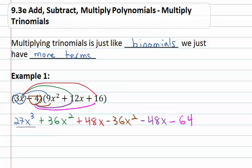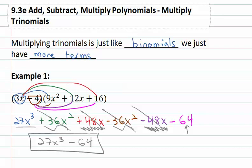We have this 27x cubed, nothing like it. 36x squared is like the negative 36x squared, which is really nice because they subtract out to 0. 48x is like negative 48x, which again is really nice because they subtract out to 0. All that's left is the negative 64. Our polynomials multiply to 27x cubed minus 64.